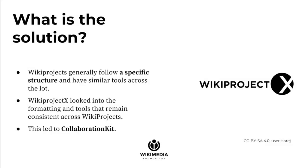As part of the previous round of WikiProjectX, we created a prototype set of templates to help try to organize how these would work — basically by taking the specific structure that WikiProjects normally follow and templatizing it, so that people can just fill in the content and have the format provided for them. The first iteration was called WikiProjectX, and after that we started working on an extension called CollaborationKit.